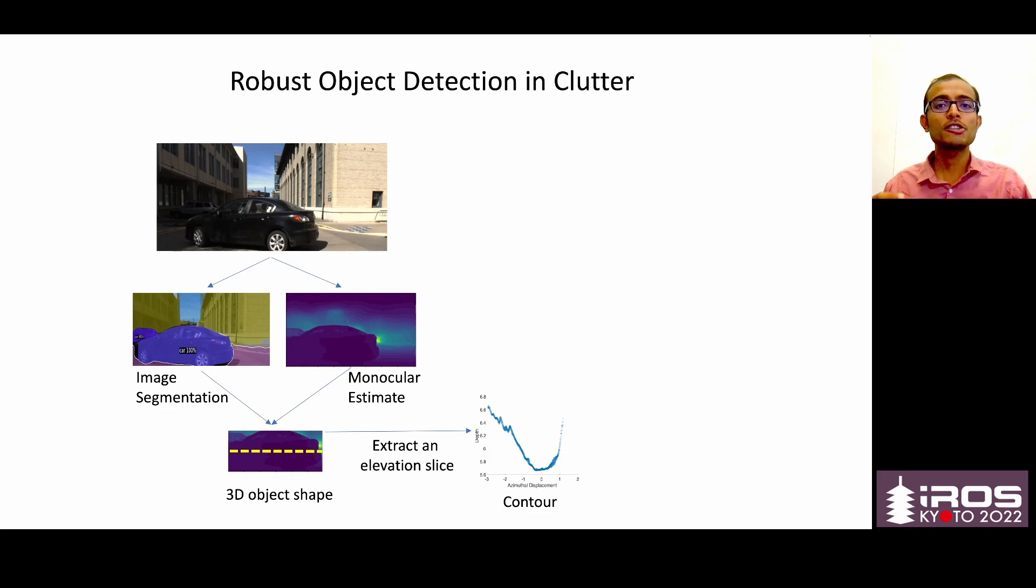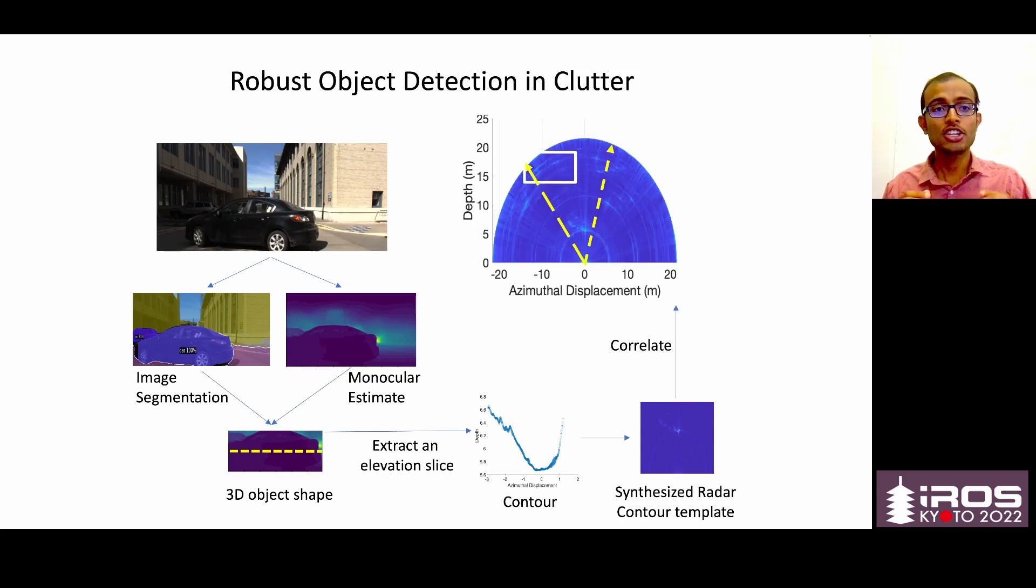Our objective now is to find where this contour is in the entire radar image. So the key idea that we use is that clutter is not shaped like the contour, and only our object is shaped like the contour in the radar image. So we transform this contour to a radio frequency contour template, and do a correlation across the entire radar image or in places where we believe that the car can lie, and wherever the place is maximized, we make our object detection in spite of heavy clutter.